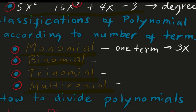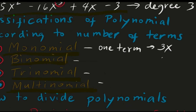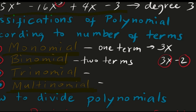If you have 3x minus 2, how many terms do we have? The minus sign separates the terms. We count 1, 2 — so we have 2 terms. If you have 2 terms, that polynomial is called a binomial.